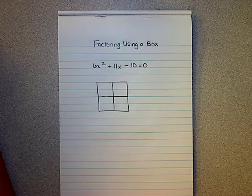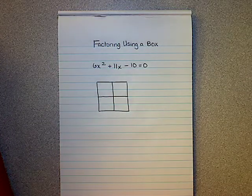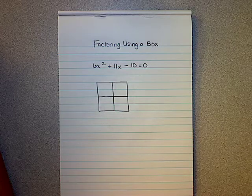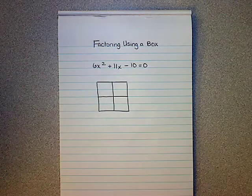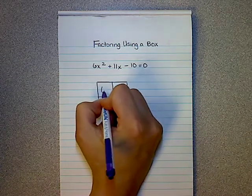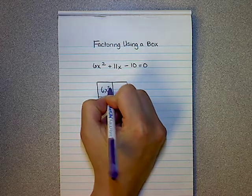Today we're going to learn how to factor using the box method to factor a trinomial. First step is you need to make sure that your problem is written in standard form and that your equation equals zero. Once you have that, you start by placing your first term in the upper left hand box in a 2 by 2 square.